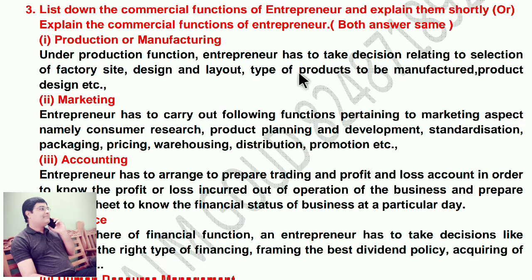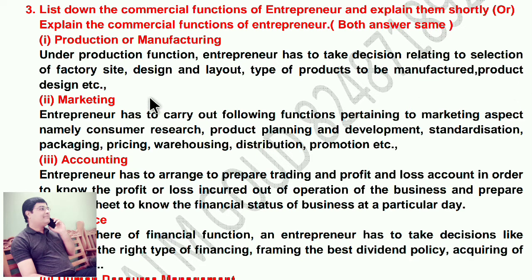List down and explain the commercial functions of entrepreneur. First, producing or manufacturing: under production function, entrepreneur has to take decisions relating to selection of factory sites, design and layout, type of products to be manufactured, product design, etc. Second, marketing: entrepreneur has to carry out functions pertaining to marketing, namely consumer research, product planning and development, standardization, packaging, pricing, warehousing, distribution, promotion, etc.